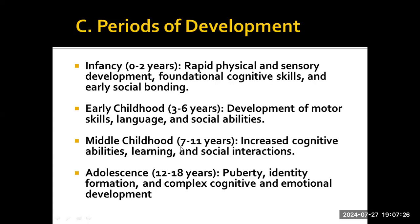Middle childhood, from 7 to 11 years, involves significant cognitive advancements, increased learning, and enhanced social interactions. Children develop logical thinking skills, allowing them to perform more complex mental operations such as classification and seriation. Academic skills, particularly in reading, writing, and mathematics, grow substantially. Peer relationships become more important, and children learn to navigate group dynamics, cooperation, and conflict resolution. This period is also characterized by the development of self-concept and self-esteem, influenced by both academic achievements and social experiences.